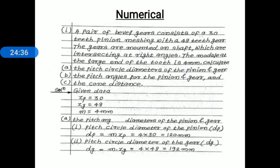Now let me solve one numerical. A pair of bevel gears consists of a 30-teeth pinion meshing with a 48-teeth gear. The gears are mounted on shafts intersecting at right angles. The module at the large end of tooth is 4 mm. Calculate: A) the pitch circle diameter of pinion and gear; B) the pitch angle for pinion and gear; and C) the cone distance.